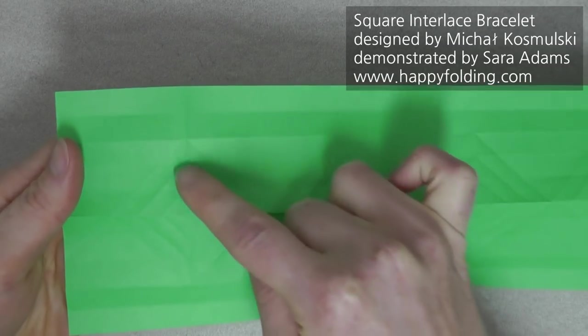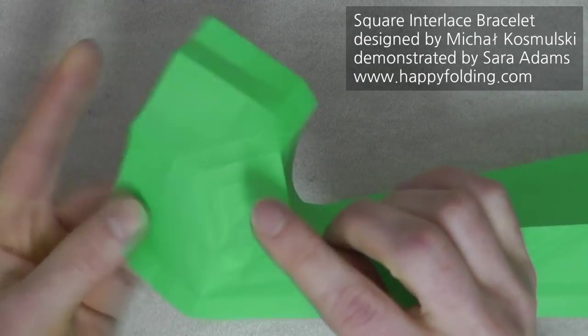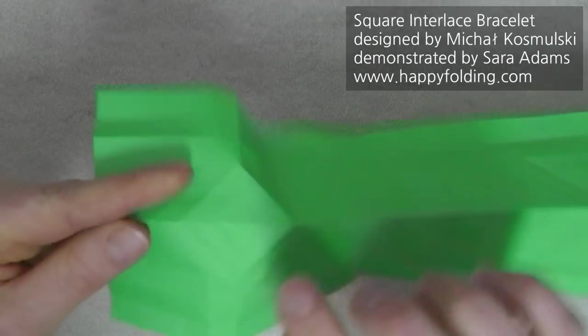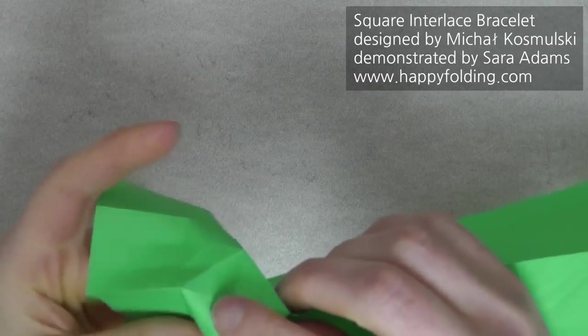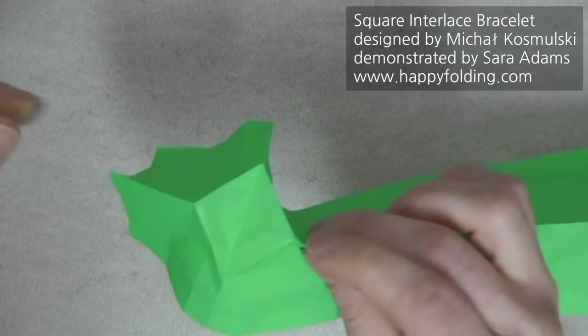and then we're going to look at these diamond shapes. There's three, and we're going to take the one in the middle and make it pop up with mountain folds. Because we have the creases in place already, it's quite easy.